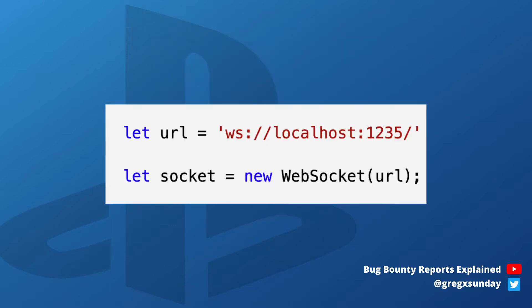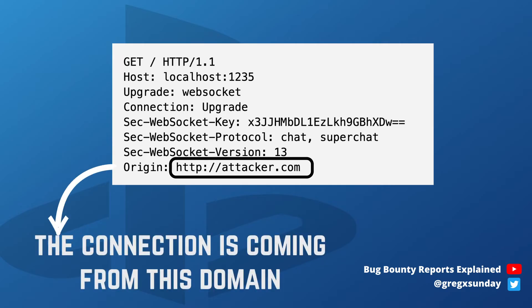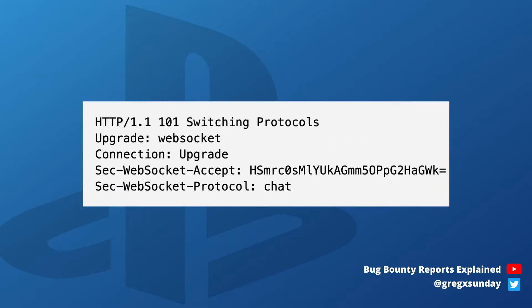The WebSocket connection is initiated by JavaScript code. When it gets executed, an HTTP request is sent, and in the origin header the browser will put the domain from which this code was executed. It's the server's responsibility to verify if this origin is trusted or not. If it's valid, the server responds with an appropriate response and the WebSocket connection is established so both sides can communicate.